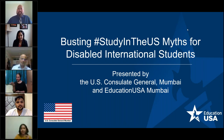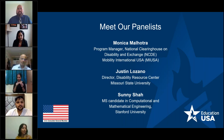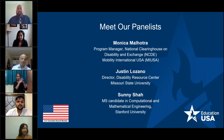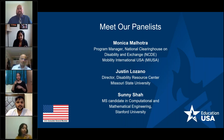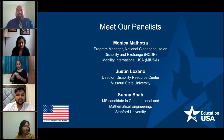We have a panel of three speakers joining us today, and after the panel addresses us, there will be time for questions at the end. First, Monica Malhotra, who is the program manager with the National Clearinghouse on Disability and Exchange at Mobility International USA, which aims to increase participation of people with disabilities in inclusive international exchange programs. Previously, Monica worked for 10 years at the University of Texas at Austin in various roles including admission, immigration, international student advising, and other student services.